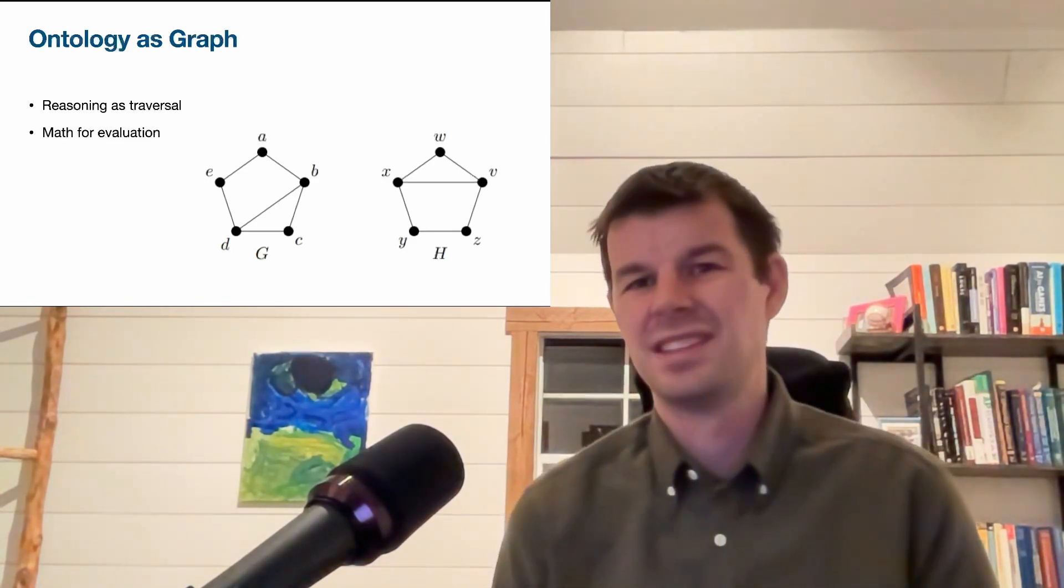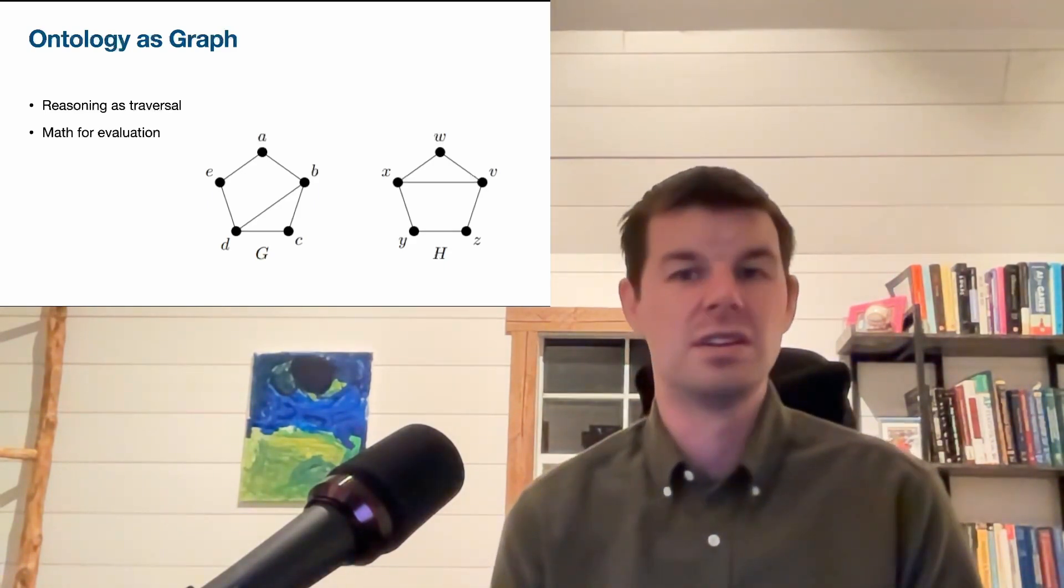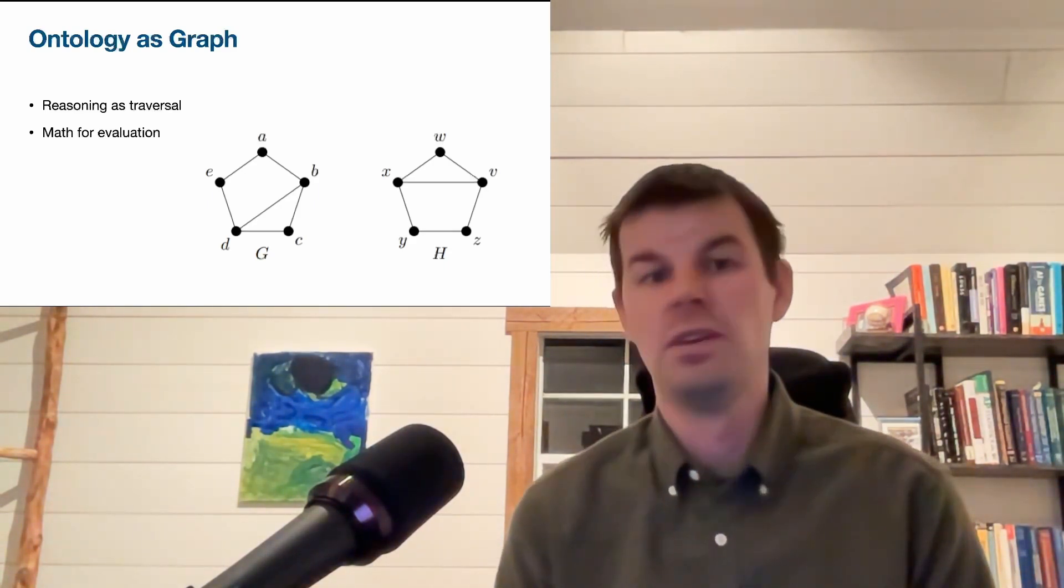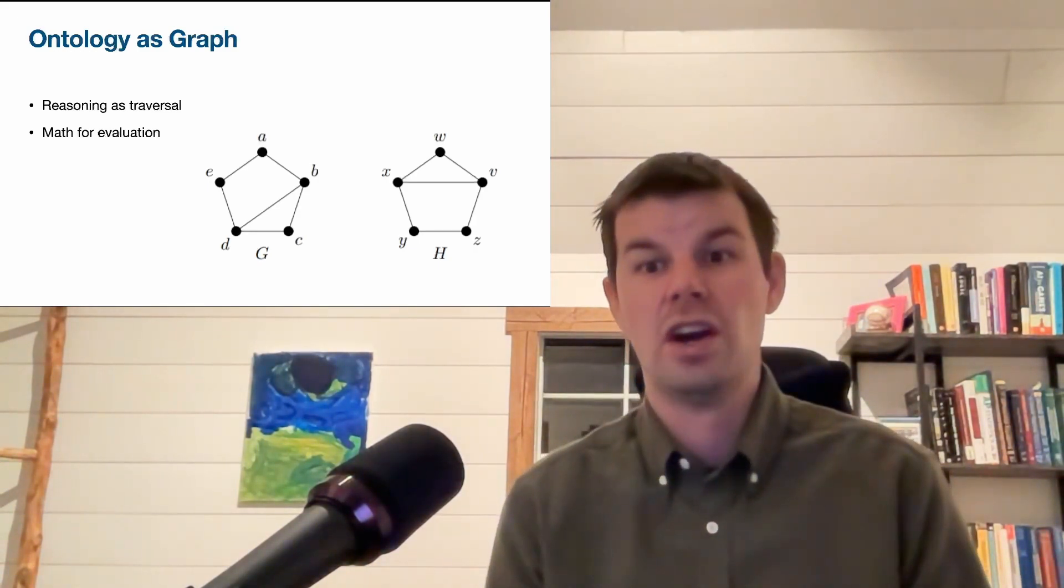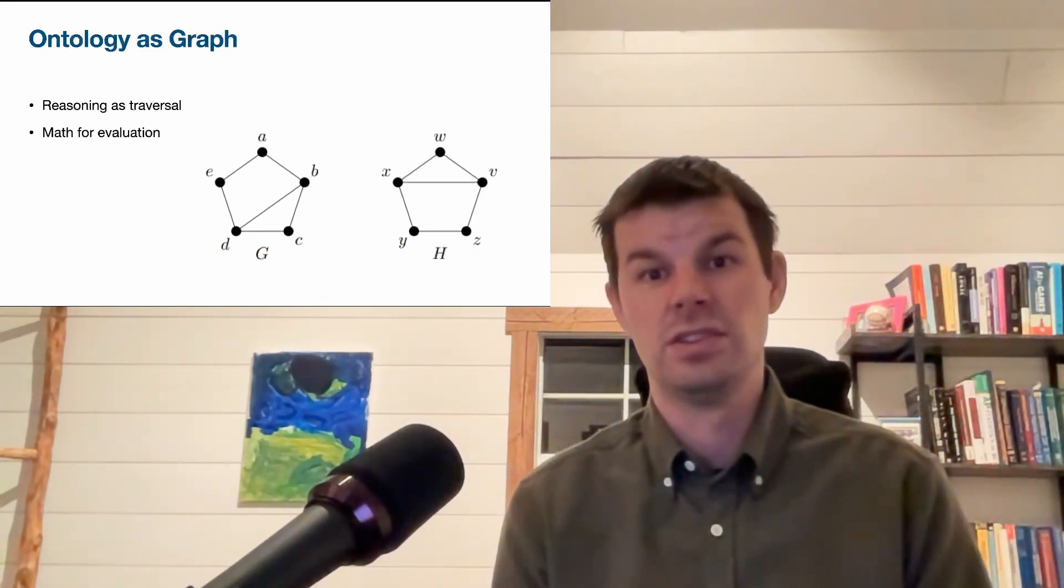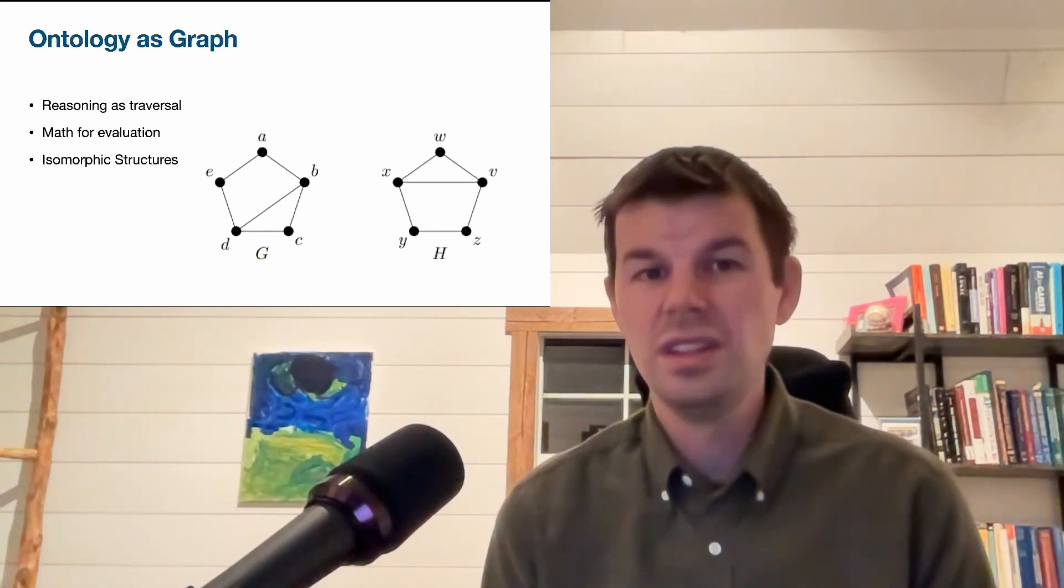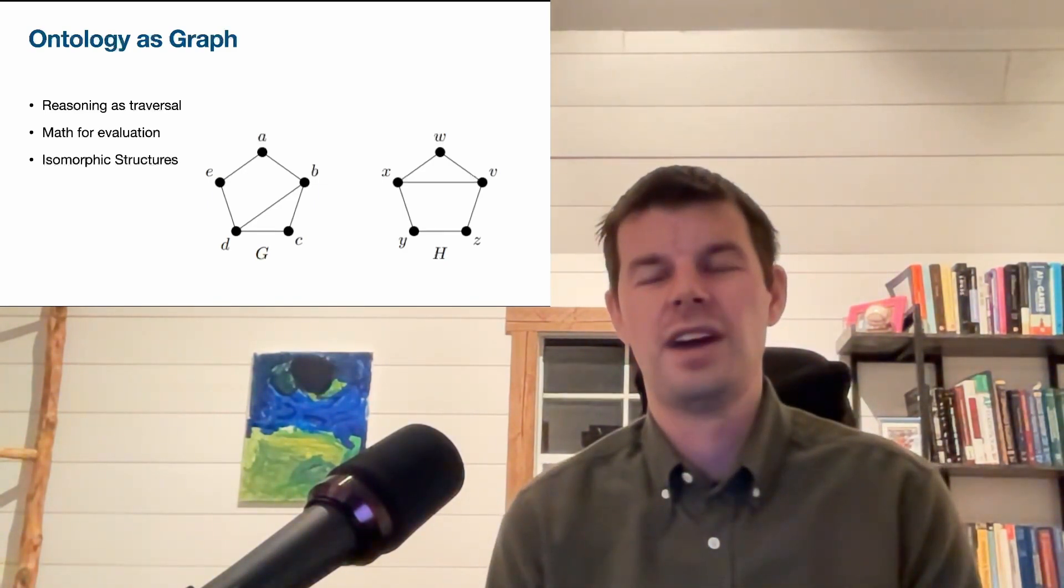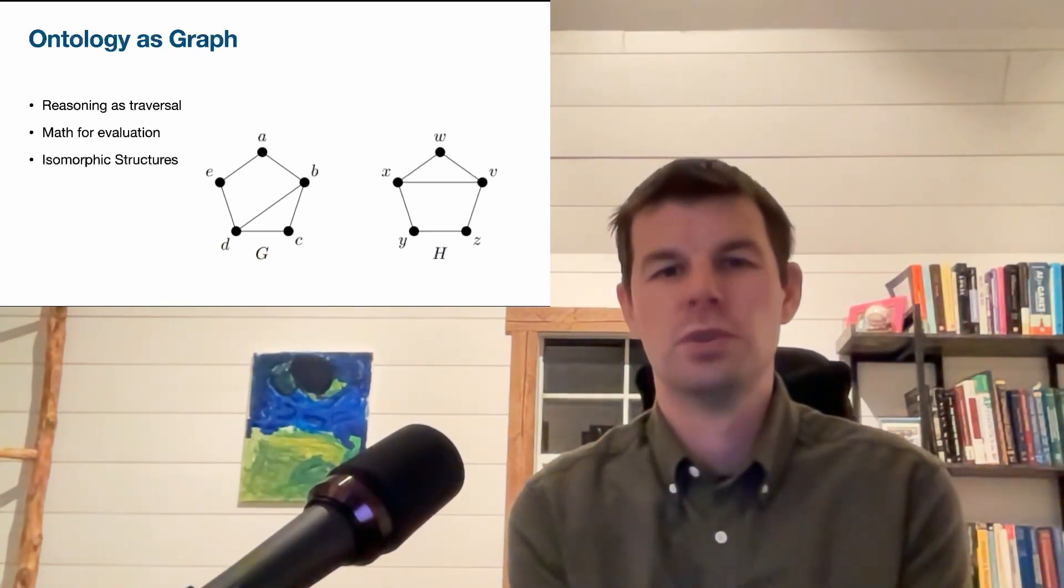It also allows us to assess an ontology in terms of its mathematical properties. I could compare two ontologies and say, how many edges do they have? How many different types of edges do they have? Are they connected? Are there any gaps in the ontology or in the graph?